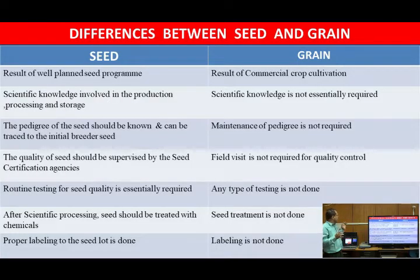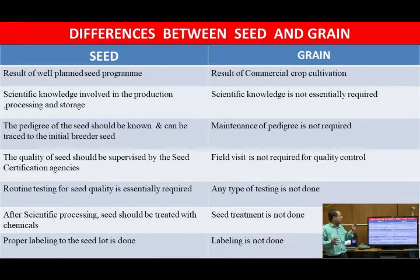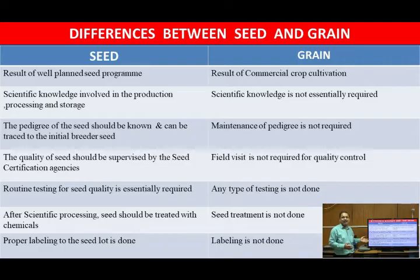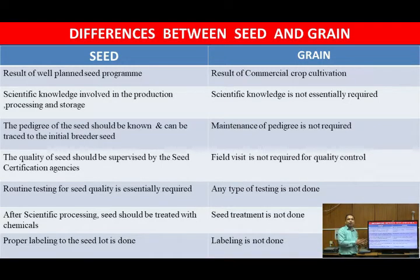In case of seeds, there is scientific knowledge involved in the production, processing, and storage. Those scientific practices include isolation distance and roguing. Isolation is nothing but keeping one from another — one crop should be distant from other crop varieties. There are two different types of isolations: time isolation and distance isolation. Roguing is another scientific practice — we just remove the off-types from seed production plots.